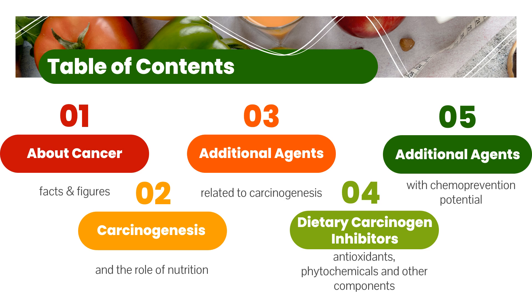And then we're going to talk about carcinogen inhibitors that can be consumed through the diet — things like antioxidants, phytochemicals, and other components found in different food items. Finally, we're going to identify additional agents that are not related to diet immediately, but are lifestyle factors that have chemoprevention potential — meaning they have the ability to change the course of cancer formation at different points in time.